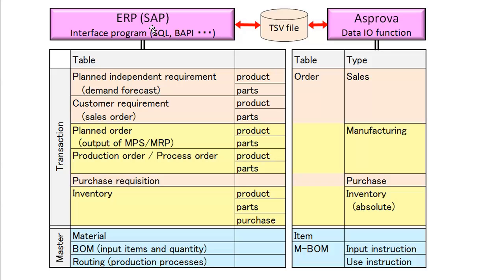On the ERP side, you must prepare an interface program. As for SAP, a typical way to make the interface program is by using BAPI function. Import and export can be executed by Data I/O functions on the Asprova side. Mostly, there is no need to make new programs.